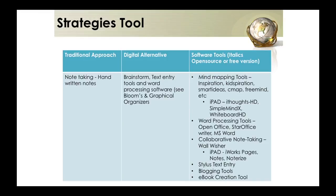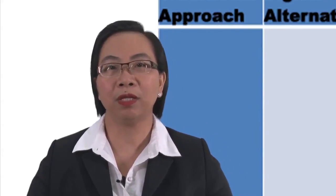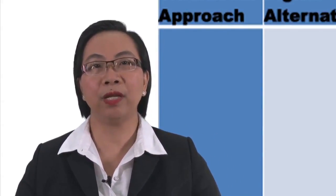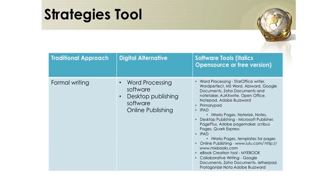We have posterior tools or ebook creation tools if we want our students to create activities related to journal writing. If the activity is about coming up with diagrams, mind maps, graphical organizers, and flow charts, the traditional tool is butcher paper or drawn diagrams. The digital alternative is using flowchart and mind mapping software such as Gliffy, Draw Anywhere, Whiteboard, iBrainstorm, Eye Thoughts, MindMaster, iPad Eye Thoughts, Simple Mind X, or Whiteboard.